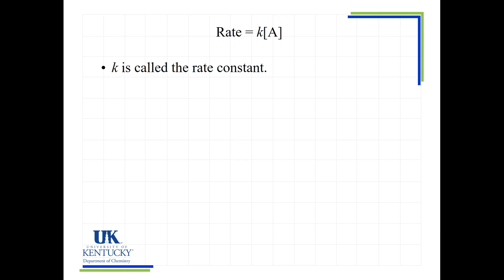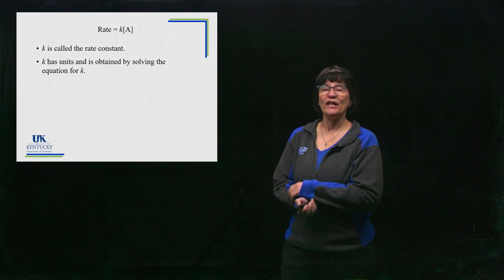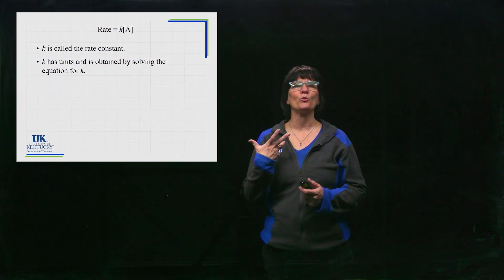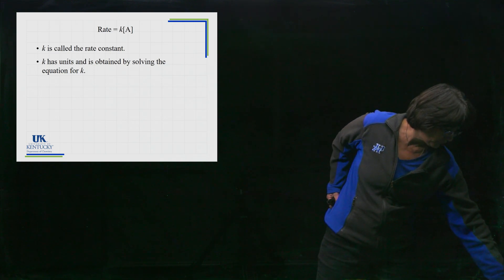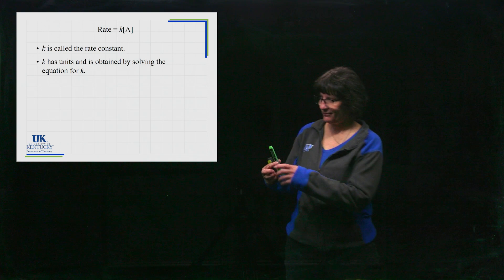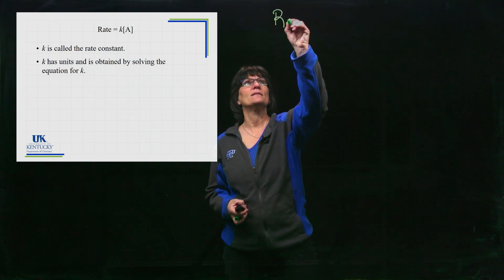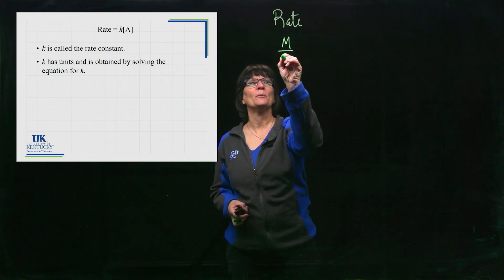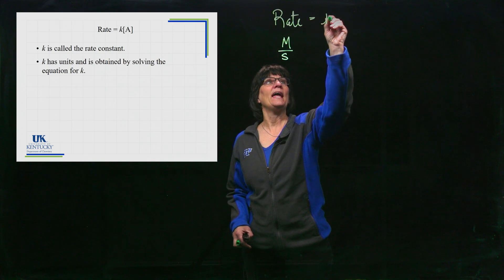K is called your rate constant. It does have units, and its units are going to be different depending on what the rate law is. We know that rate has to be in units of molarity per some time — I'll use seconds.